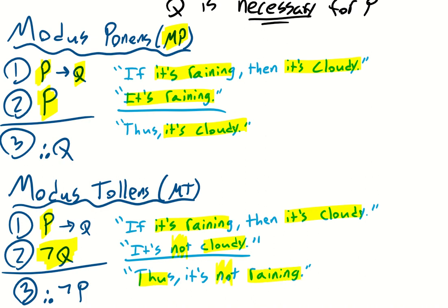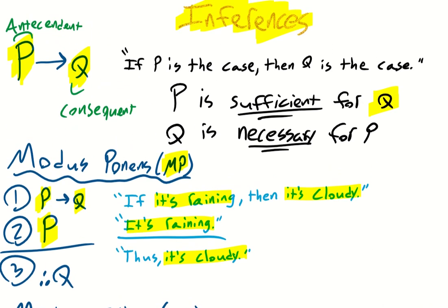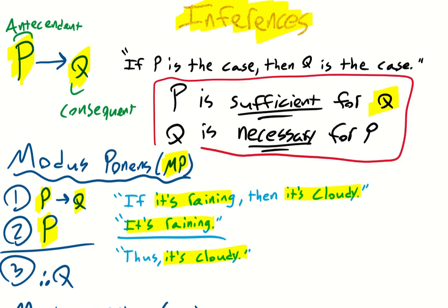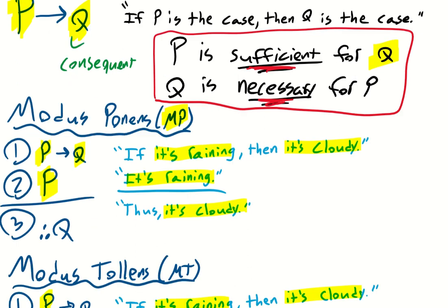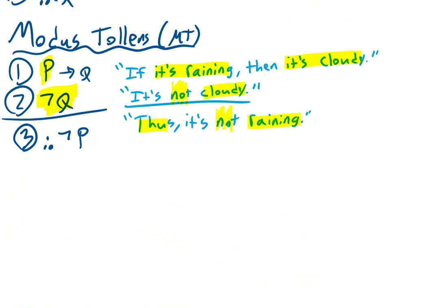The consequent is necessary for the antecedent. Indeed, the distinction between sufficient and necessary conditions is, in my mind, at the heart of understanding the mixed hypothetical syllogism. And if we confuse sufficient and necessary conditions, we can easily run into two formal fallacies: the fallacy of affirming the consequent, and the fallacy of denying the antecedent.